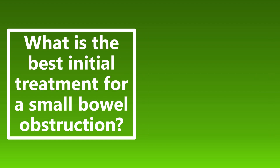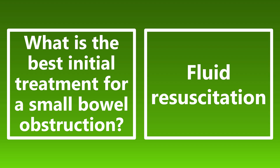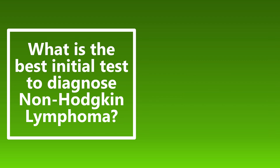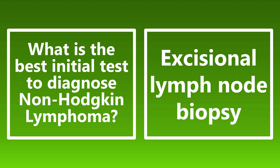What is the best initial treatment for a small bowel obstruction? The initial treatment is conservative: fluid resuscitation, supportive care, keeping the patient NPO, inserting an NG tube, and bowel rest. If a patient has worsening symptoms, they may need surgical resection. What is the best initial test to diagnose non-Hodgkin lymphoma? This is going to be an excisional lymph node biopsy. Make sure you're reading questions slowly to distinguish initial test, first-line treatment, and gold standard.